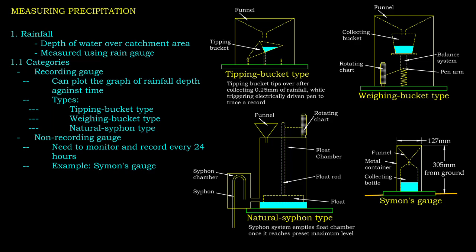A recording rain gauge can produce a continuous plot of rainfall against time, which is helpful in analyzing the rainfall duration and intensity. There are three main types of recording rain gauges: tipping bucket, weighing bucket, and natural siphon.